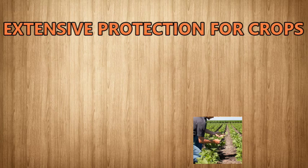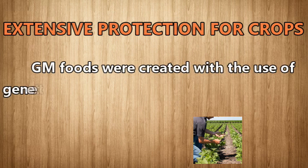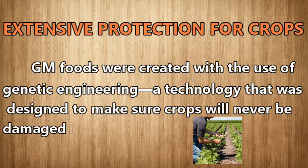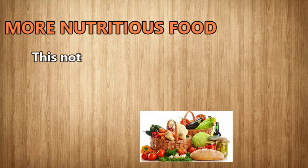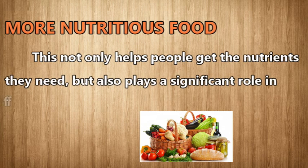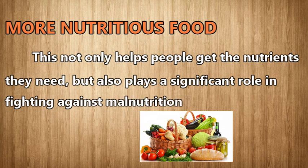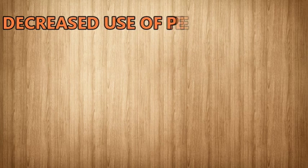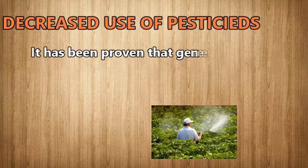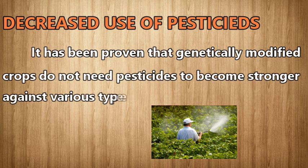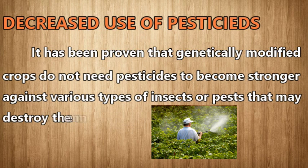Extensive protection for crops: GM foods were created with the use of genetic engineering, a technology designed to make sure crops will never be damaged at a fast rate. More nutritious foods: this not only helps people get the nutrients they need, but also plays a significant role in fighting against malnutrition in third world countries. Decreased use of pesticides: it has been proven that genetically modified crops do not need pesticides to become stronger against various types of insects or pests that may destroy them.